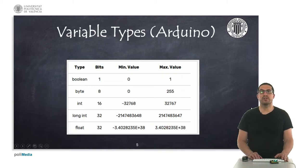Variable types depend on the hardware. For instance, for Arduino platforms in this table I'm showing you the sizes of each of the variable types. Booleans occupy one single bit, bytes occupy 8 bits, integers occupy 16 bits, long integers occupy 32 bits, and floats occupy 32 bits too.